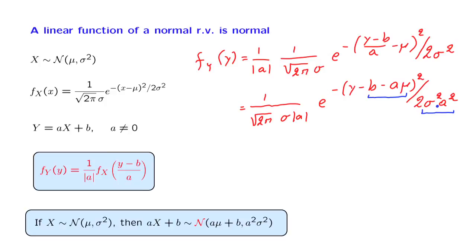So the conclusion is that the random variable y is normal, with mean equal to b plus a mu, and with variance a squared sigma squared.